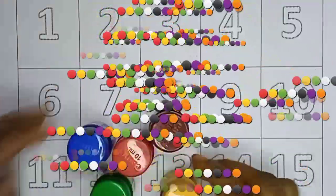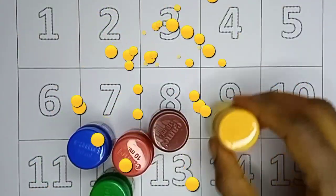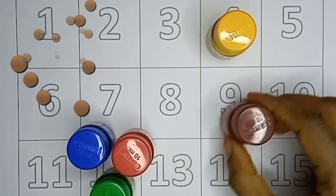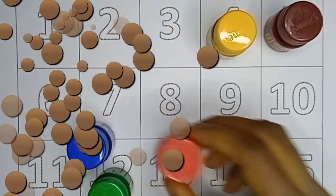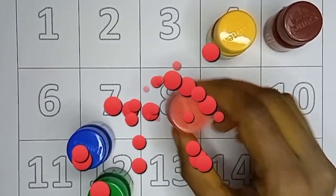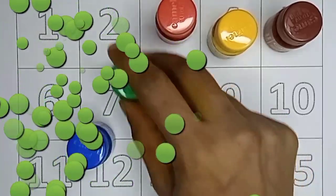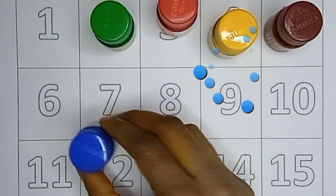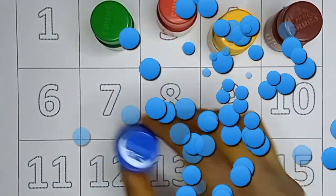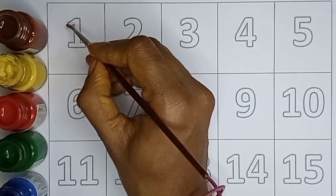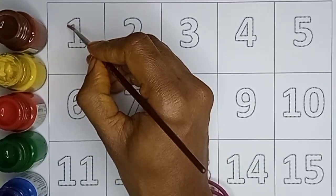Colors. Yellow color. Brown color. Red color. Green color. Blue color. Red color.